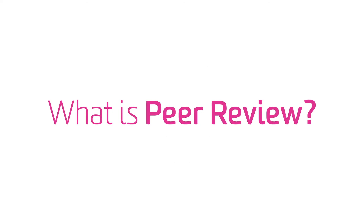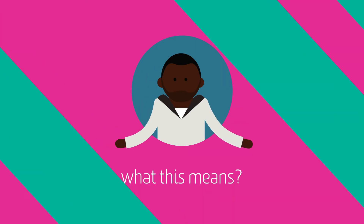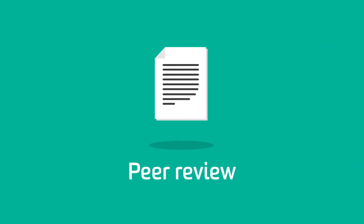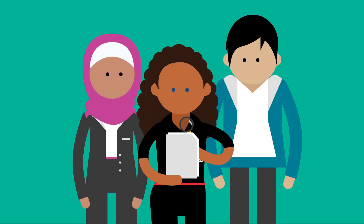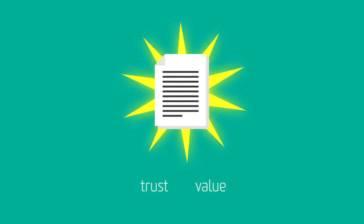What is peer review? Have you heard the term peer review and wondered what this means? Peer review is a quality control process where an author's scholarly work or research is scrutinised by experts in the same field. The process is designed to ensure that published works are valid, original, and of high quality. Because of this, peer-reviewed articles convey a level of trust and value to the audience.